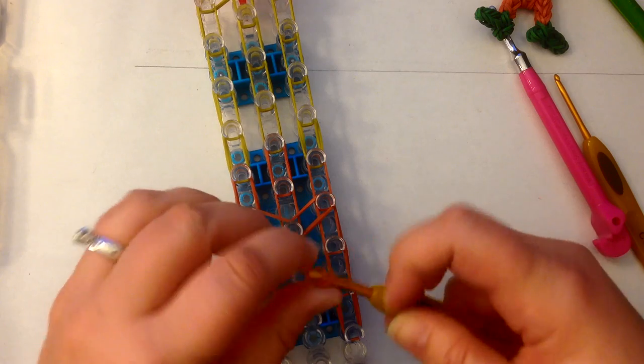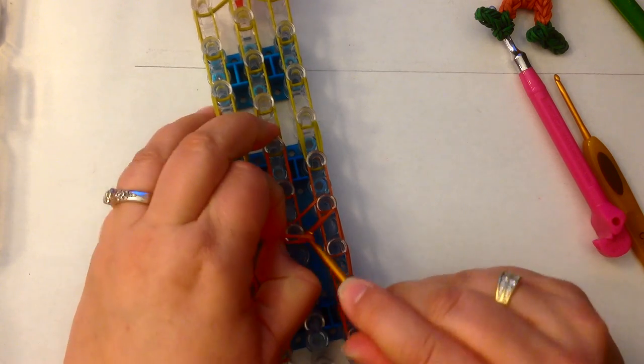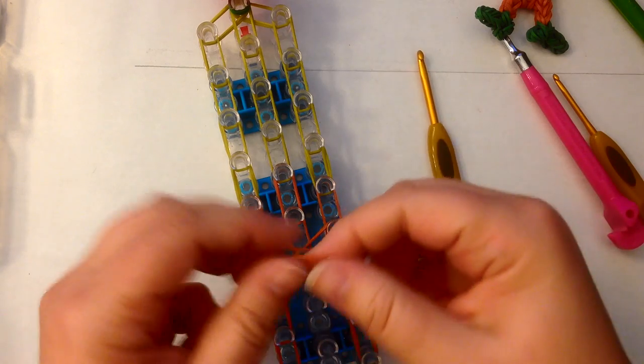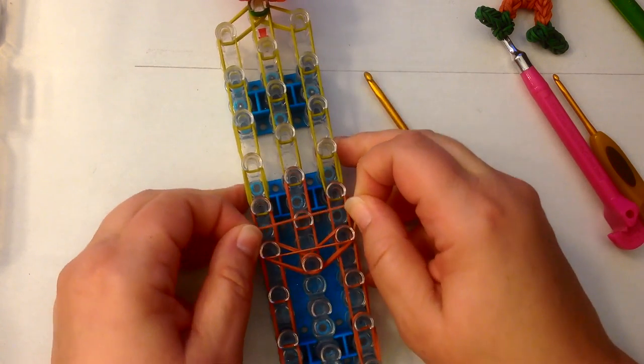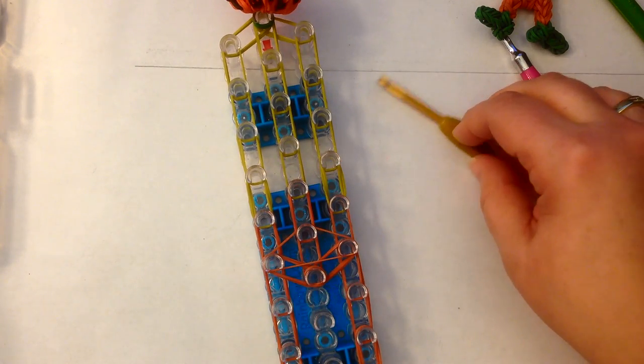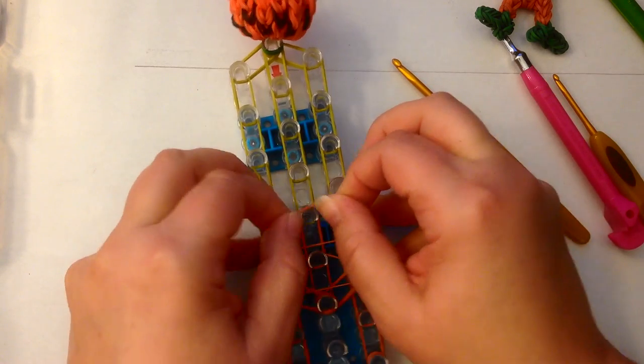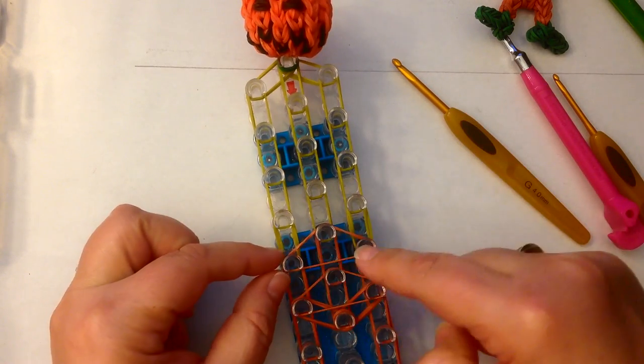I'm going to put an end cap here. Single band, wrap it around my hook twice, and pop that there. We're going to use a single band as a crossover, place that here. Single band as a crossover, place that here. So they're going in a triangle.